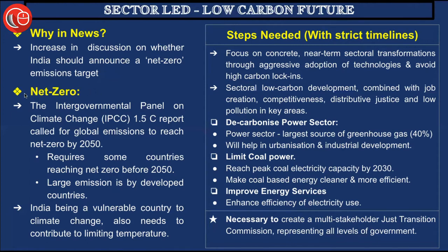The Intergovernmental Panel on Climate Change (IPCC) report calls for global emissions to reach net zero by 2050. It states that to control climate change and global warming at the fastest rate, global emissions should reach net zero by 2050 at the latest. This requires some countries to reach net zero even before 2050, since emissions rates vary significantly across nations.